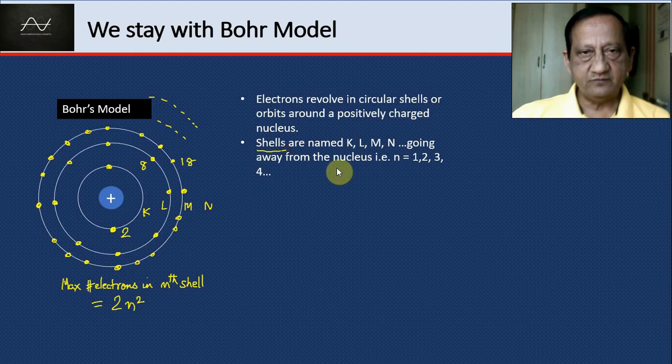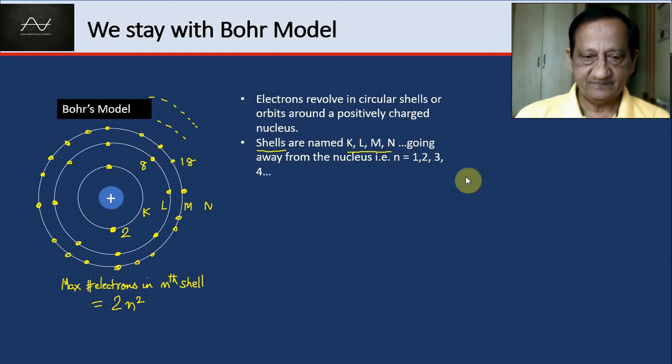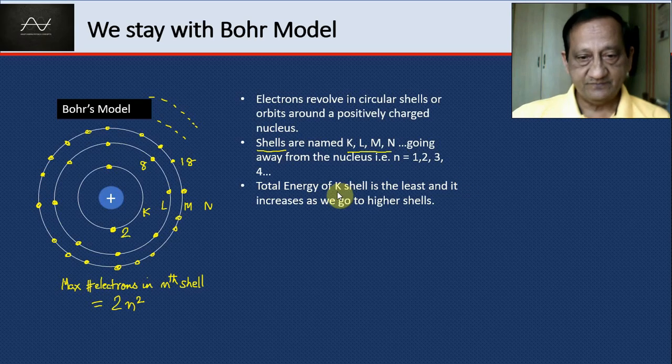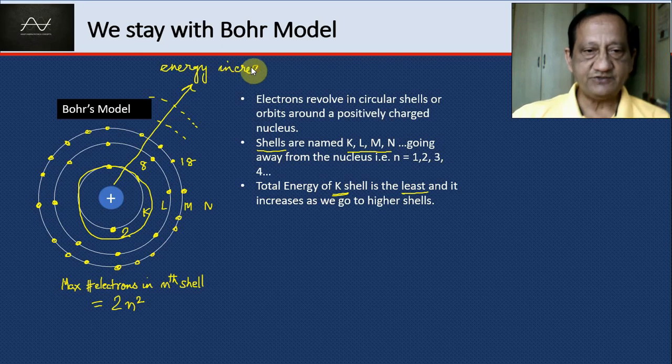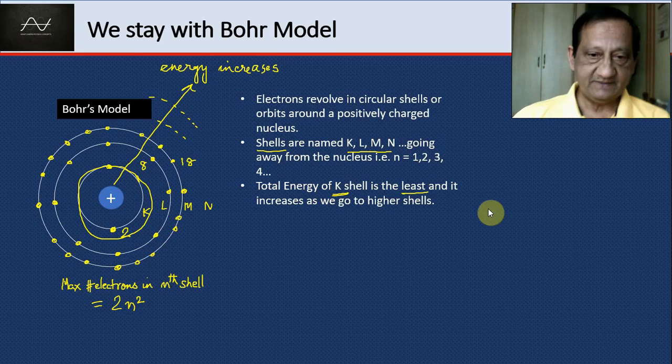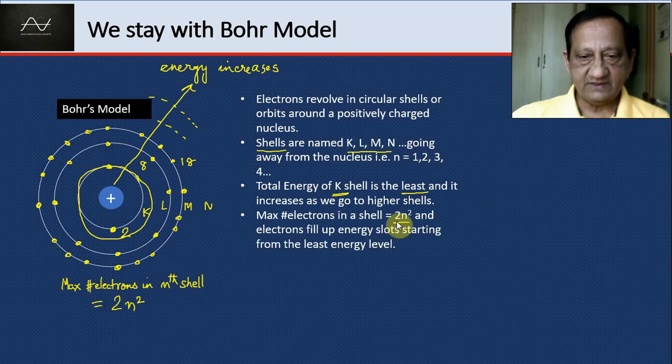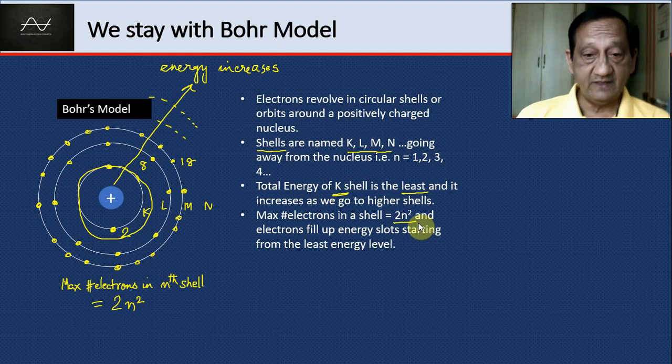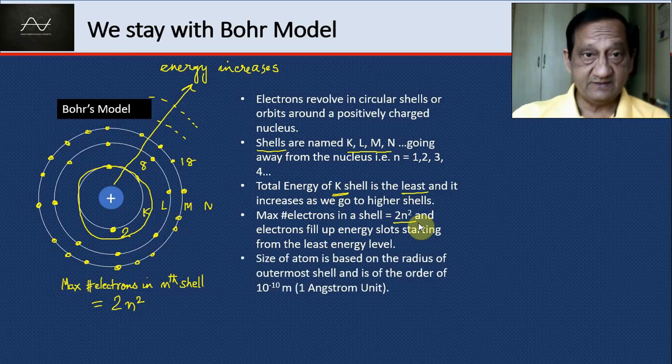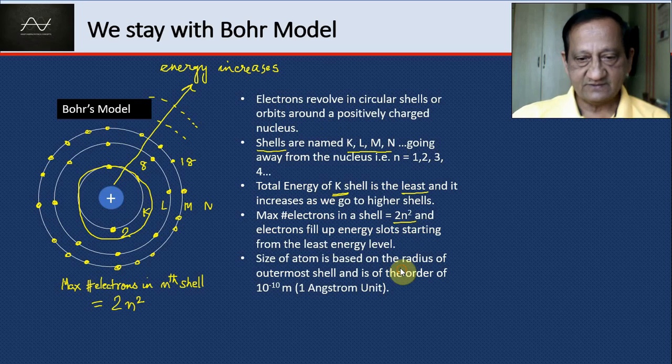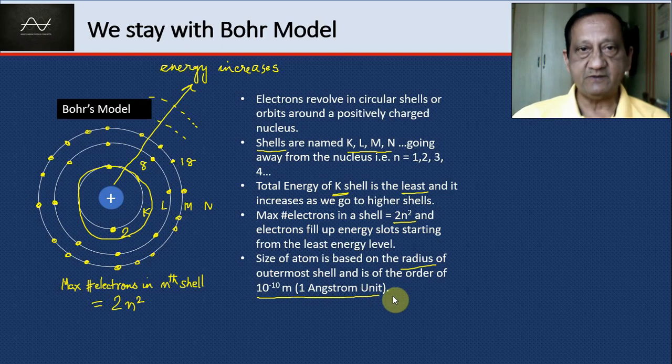The shells are named n equals 1, 2, 3, 4 or K, L, M, N, etc. The total energy of the K shell is the least. As you go outward, the energy increases—I'm talking about the total mechanical energy, kinetic plus potential. Max number of electrons in a shell is 2n squared, and electrons fill up energy slots starting from the lowest n. The size of an atom is based on the radius of the outermost shell and is of the order of 1 angstrom unit, which is 10 to the power minus 10 meters.